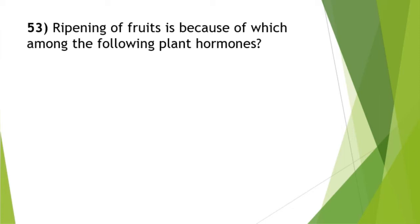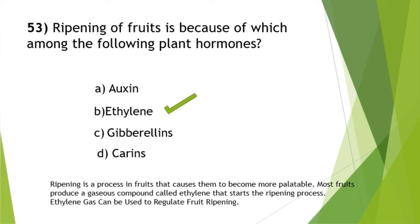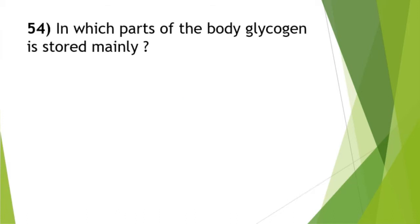Ripening of fruits is caused by which plant hormone? This is one of the most important questions — you will see it repeatedly in various examinations. The answer is ethylene (option B). Ripening is a process in fruits that causes them to become more palatable. Most fruits produce a gaseous compound called ethylene that starts the ripening process. Ethylene gas can be used to regulate fruit ripening.